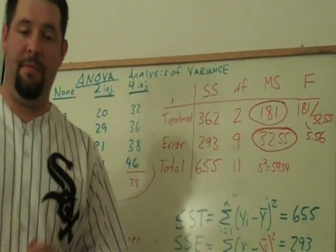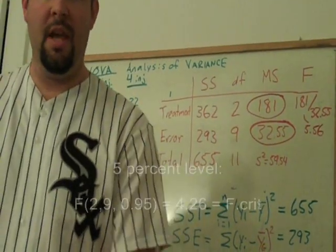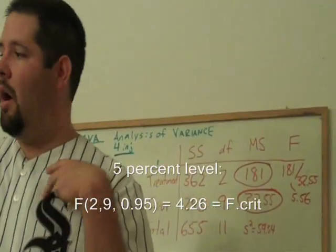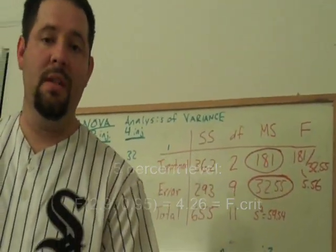There are nine denominator degrees of freedom. You can go look up in your table, decide what your critical value is.